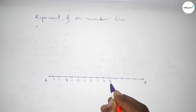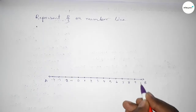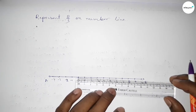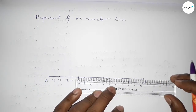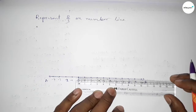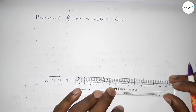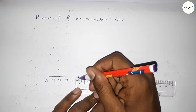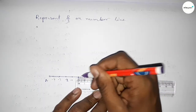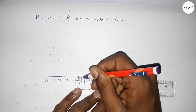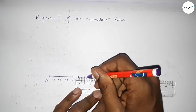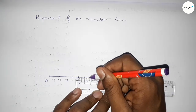Now we have to divide the distance between any two numbers into three parts approximately. First, divide the distance between 0 to 1 into three parts approximately — this is 0.3 something and this is 0.6 something approximately. Similarly, dividing the distance between 1 to 2 — this is 0.3 something and 0.6 something approximately.